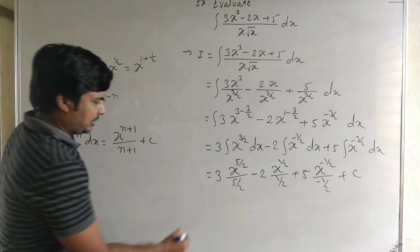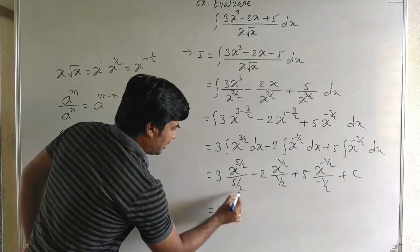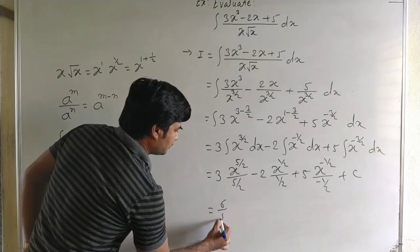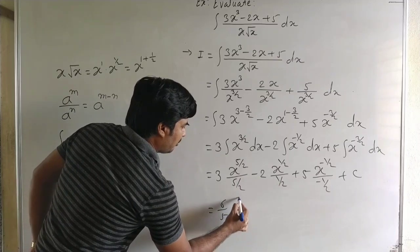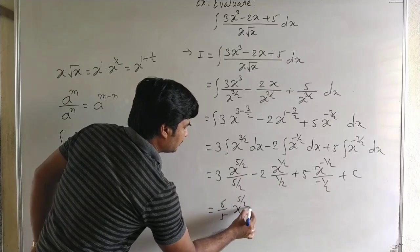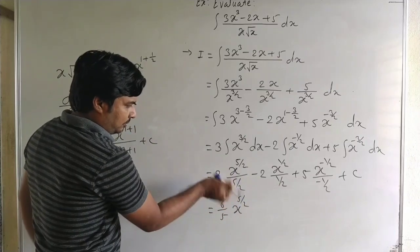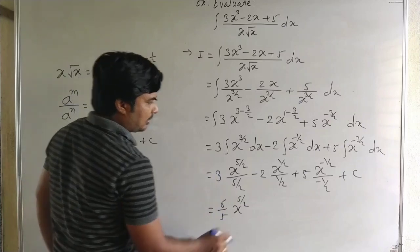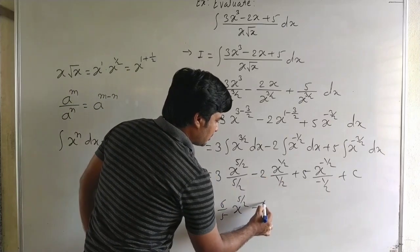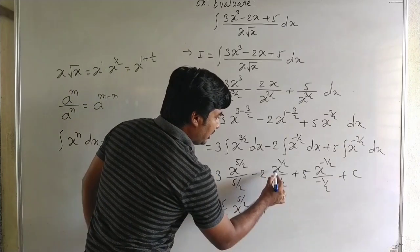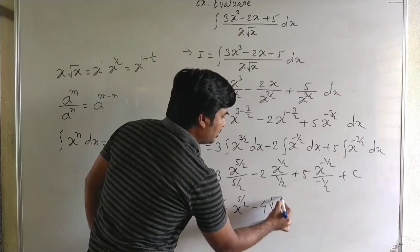Now, simple calculation. 5 by 2 gives 2 by 5, therefore 3 times 2 by 5 equals 6 by 5 into x to the power 5 by 2. Then minus 2 upon 1 by 2 gives minus 4 into x to the power 1 by 2, which is under root x.